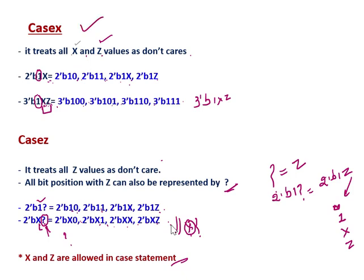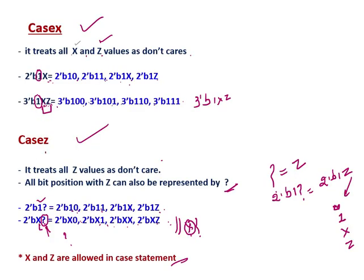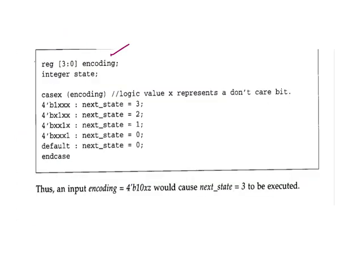So this is casex and this is casez. Let's see an example. We have a 4-bit variable called encoding and an integer called state. In casex encoding, the logic value x represents the don't care bit. Inside the case we have expressions: 4b1xxx, 4bx — then default and endcase.